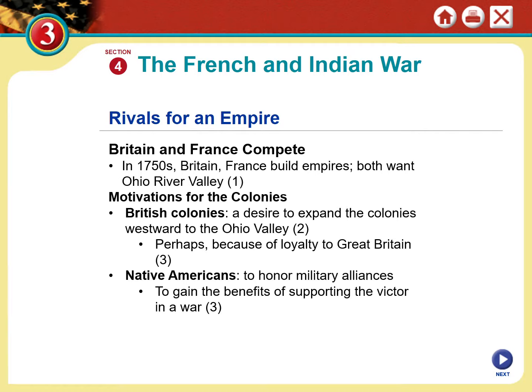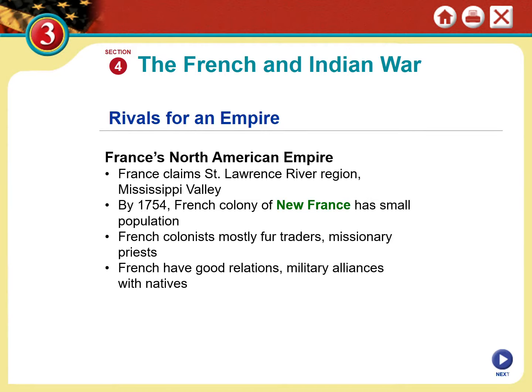Whichever side won, those Native American tribes would benefit from being part of a victorious alliance. The tribes that supported Great Britain in the French and Indian War did benefit from that alliance. Meanwhile, France had a significant amount of territory in North America: the St. Lawrence River region, the Mississippi Valley, and even land west of the Appalachians — the French Broad River Valley — belonged to the French.